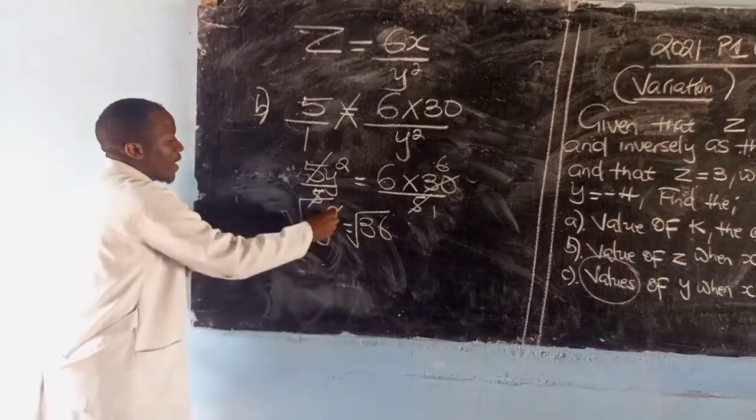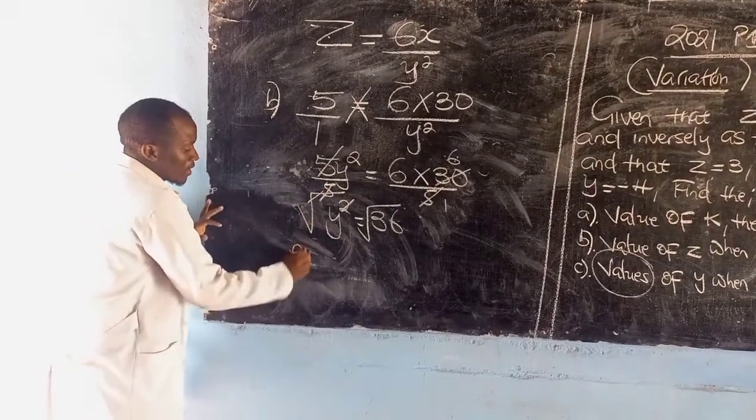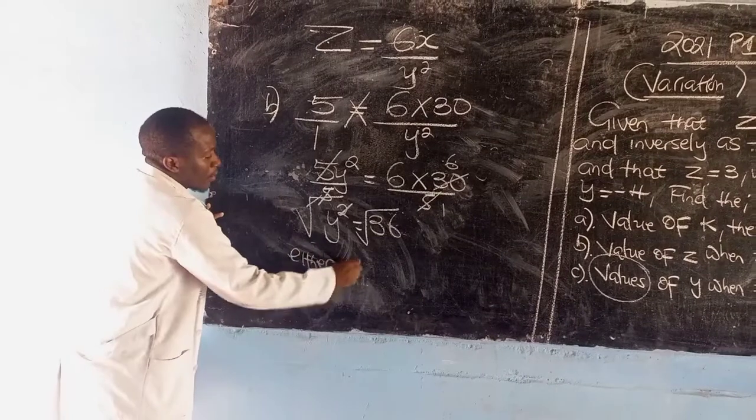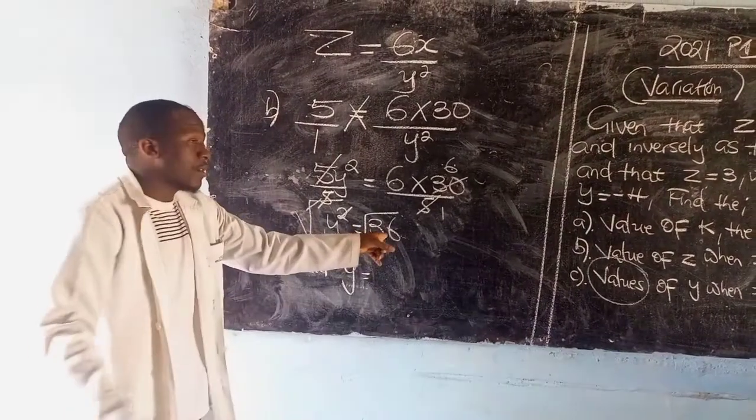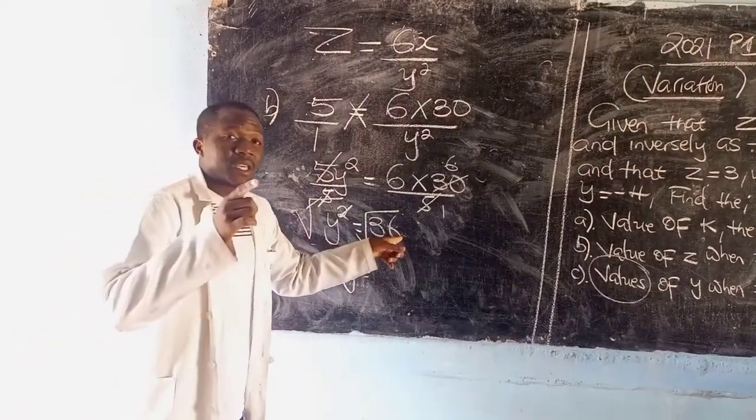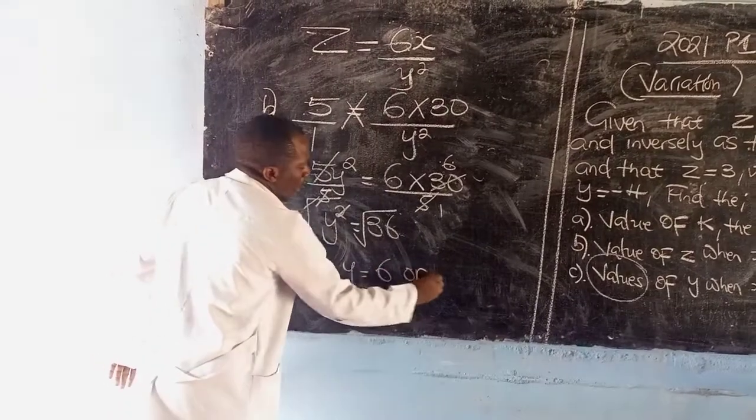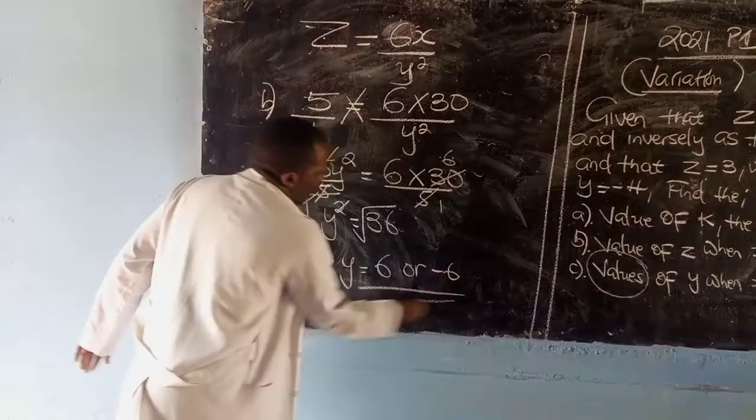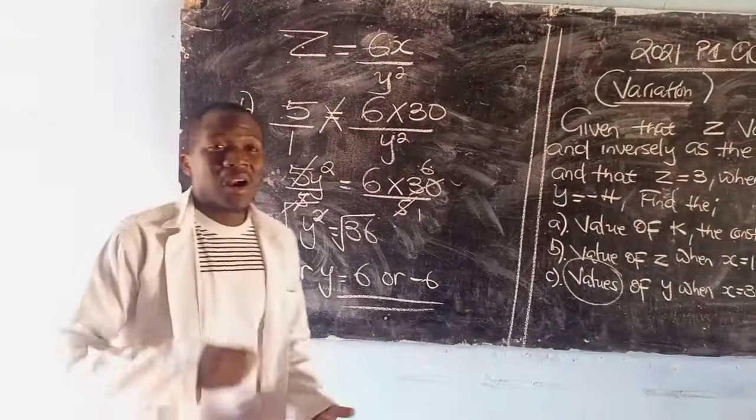So I am also going to introduce a square root, and the square root and the square will cancel. So I am going to say y equals the square root of 36 is positive 6 or negative 6. So I am going to say 6 or negative 6. So these were the answers to 2021 GCE variation.